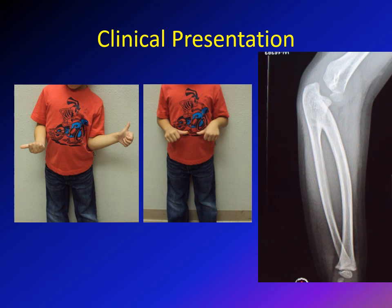This child was about eight or nine years old at first presentation. During all those years, no one noticed the problem until the school observed he could not perform activities with a musical instrument. Despite being unable to fully supinate, he could do essentially all daily activities through shoulder and wrist compensation. In today's world, most activities on computers and tablets are done in pronation, so these children are not severely affected.